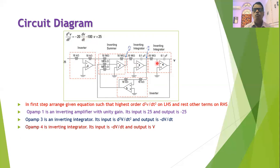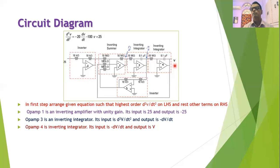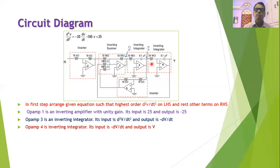Operational amplifier four is also an inverting integrator. Its input is −dV/dt and its output will be +V, so the external variable V can be connected to the circuit. The input and feedback resistances are adjusted so that when the input is dV/dt, the output of op-amp 4 equals V.